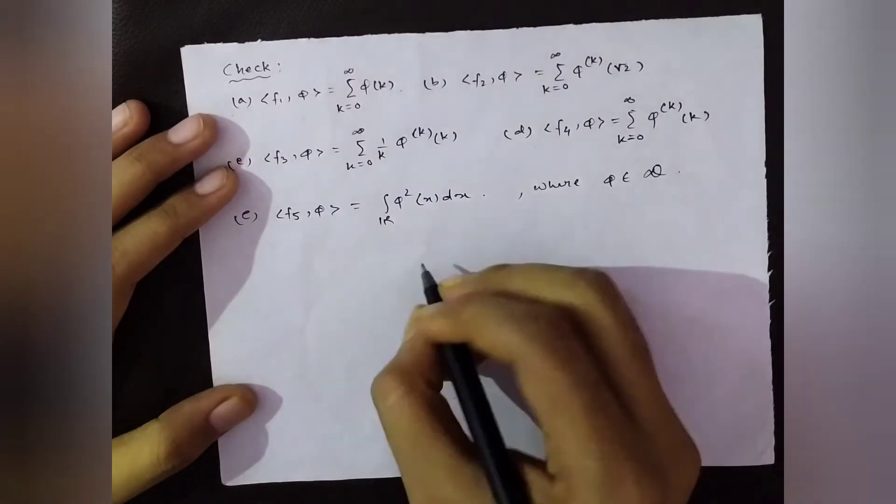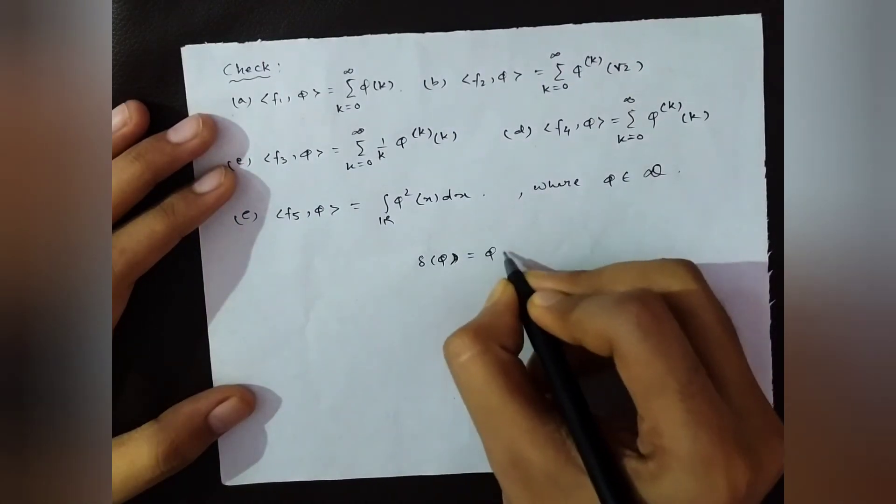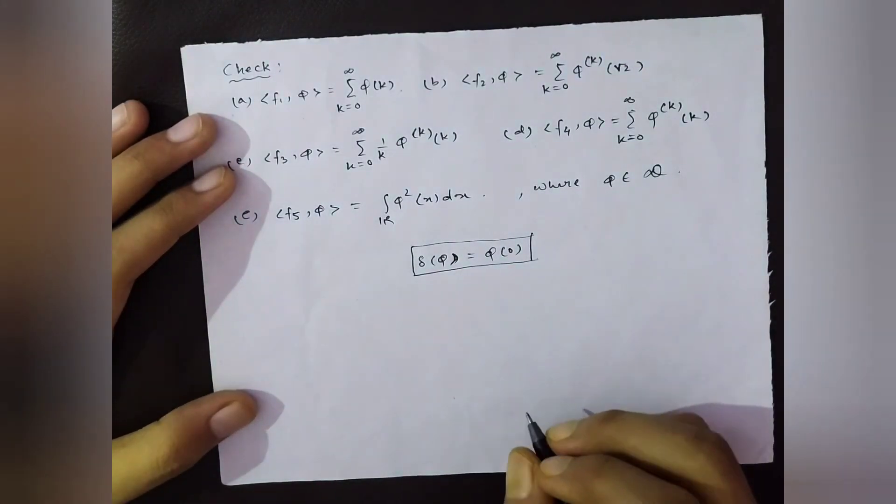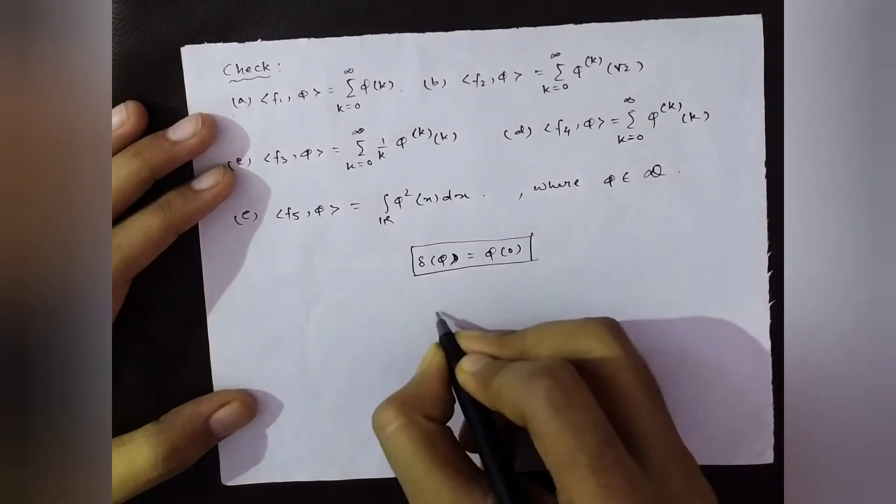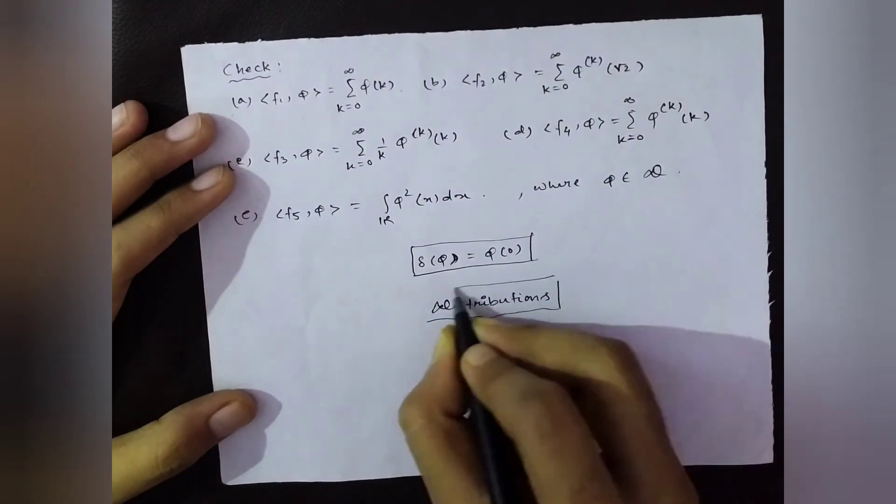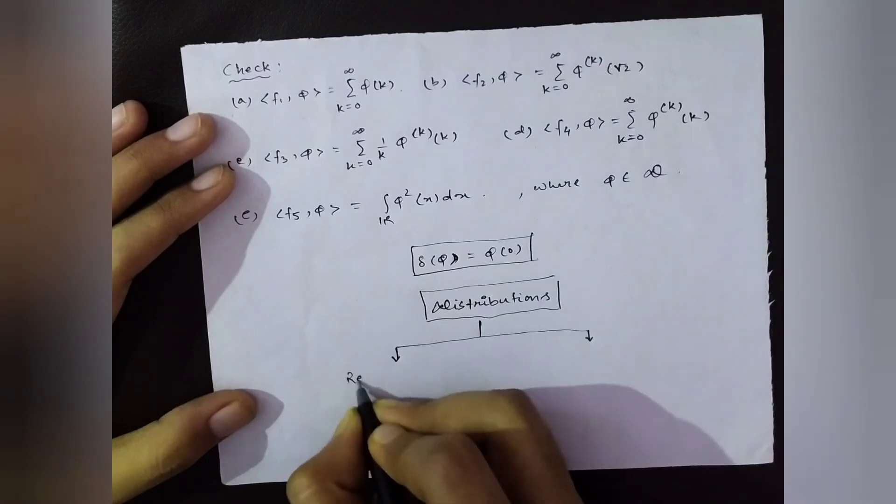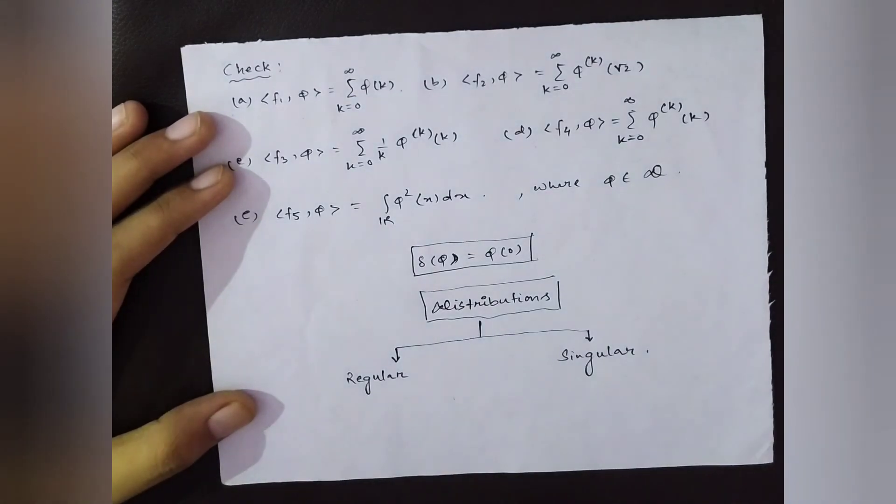To give a solid mathematical foundation to the Dirac delta function, we've seen how generalized functions were developed by Schwartz. Now we can make two classes of distributions: regular and singular. We will define these in our next videos. Thanks for watching!